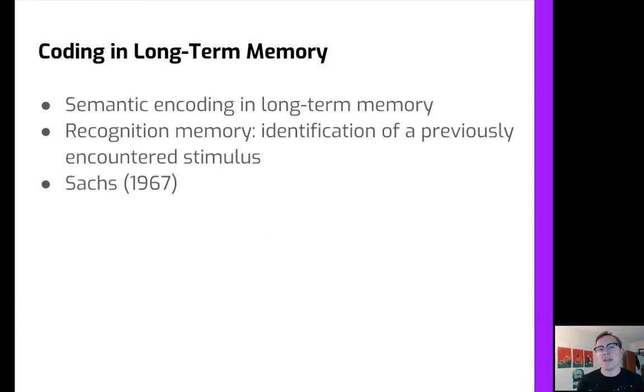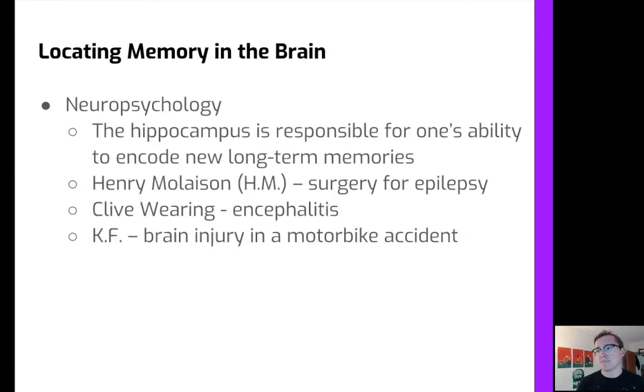And so semantic coding in long-term memory is reliant on a lot of different strategies, but one of the most common is recognition memory. And basically, this is your ability to identify a previously encountered stimulus. Now, primarily, when we talk about long-term memory, we try to establish how the normal brain functions, but oftentimes we have to use abnormal brains in order to establish what might be going right or wrong in the brain. So using neuropsychology is very important. And that's allowed us to establish that the hippocampus is the area of the brain that's primarily responsible for encoding new long-term memories.